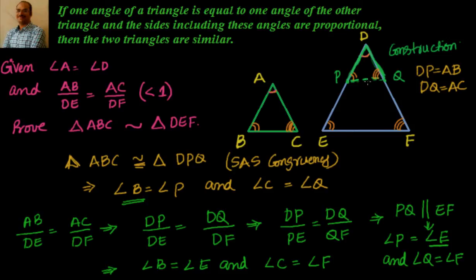To summarize: we want to leverage the basic proportionality theorem or its converse. So we construct DP equal to AB and DQ equal to AC inside triangle DEF. Now we have side DP, angle A equal to angle D (given), and side AC equal to DQ — meaning triangles ABC and DPQ are congruent by side angle side congruency. By CPCT, angle B equals angle P and angle C equals angle Q.